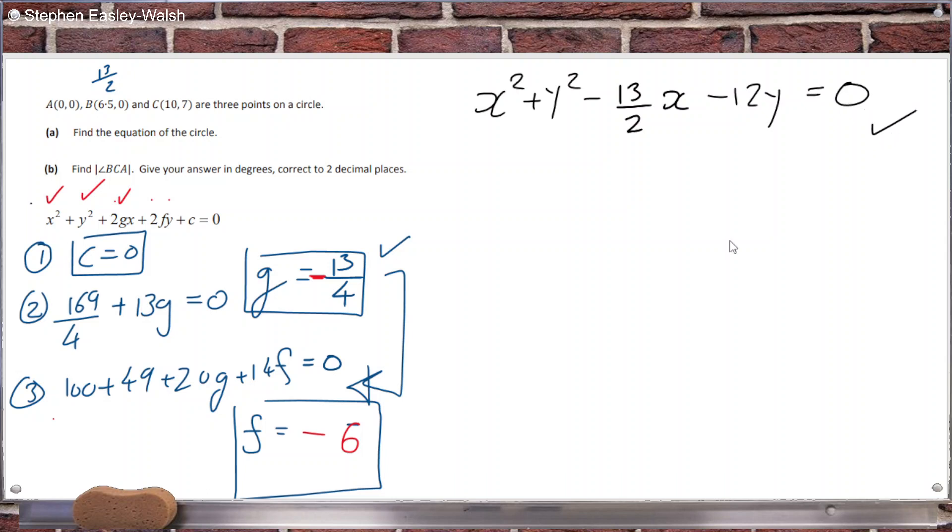Now we want the angle BCA. Let's have a look here. There's A. There's B at a distance of 6.5 out and 0. And then C will be 10, 7. So C would be up there. And we want the angle B, C, A. So we want this angle here. And we know that that height is 7. And we know that that distance there, it comes out 10 units. So that distance there is 3.5.